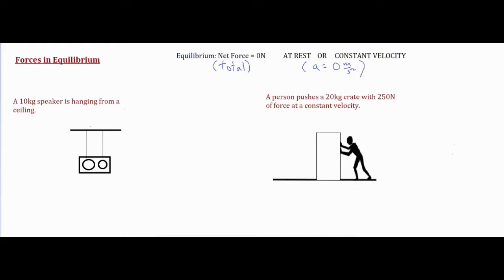Now we're going to set up our diagrams with the numerical values. This is the more basic quick and easy way to do it. We're going to draw our diagram first — that is always your first and most important step. We have our force of gravity pulling straight down, and it looks like we have two ropes pulling on this speaker, so we have two forces of tension pulling upwards. For our force of gravity we're going to take our mass and multiply it by 9.8, which gives us a force of gravity of 98 newtons.